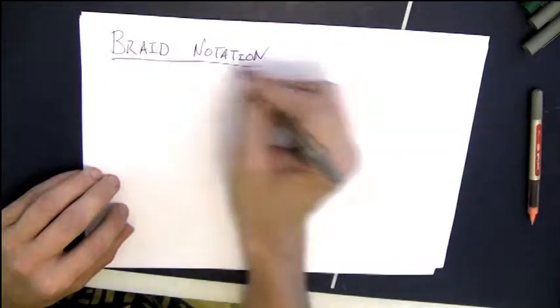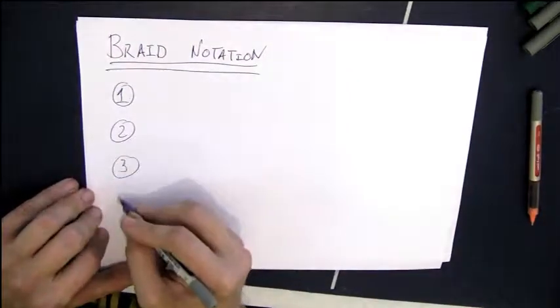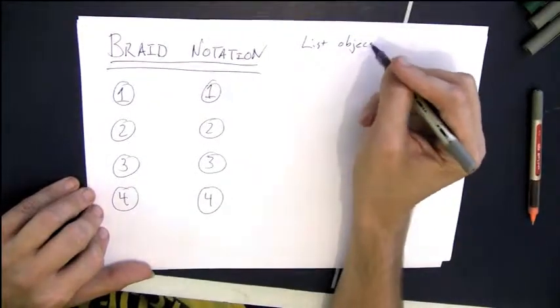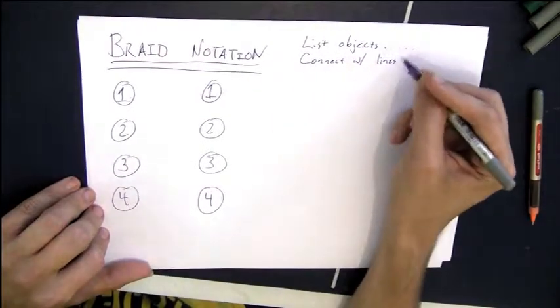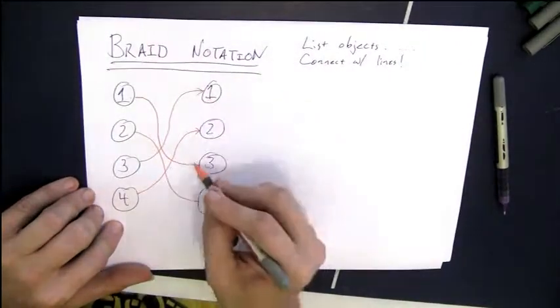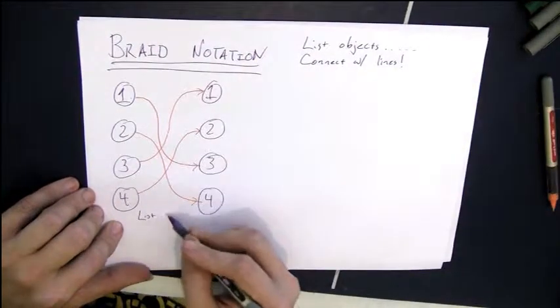Okay, so how about some particular things about permutations? So there's different ways to write them down, many, many different ways to write permutations. One is the braid notation, where we list all of the objects that we're interested in, which I'll just number one through four. And then you draw some lines showing where each one goes.